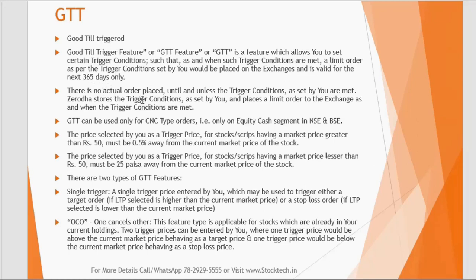Under GTT, there is no actual order placed immediately — you give a trigger price and a limit price. When the trigger price is hit, an order is sent to the exchange and executed. GTT can only be used for CNC type orders in the equity cash segment of NSE and BSE. For stocks above ₹50, the trigger price must be at least 0.5% away from the current market price. For stocks below ₹50, the trigger must be at least 25 paise away. There are two types of GTT orders: Single Trigger and OCO.